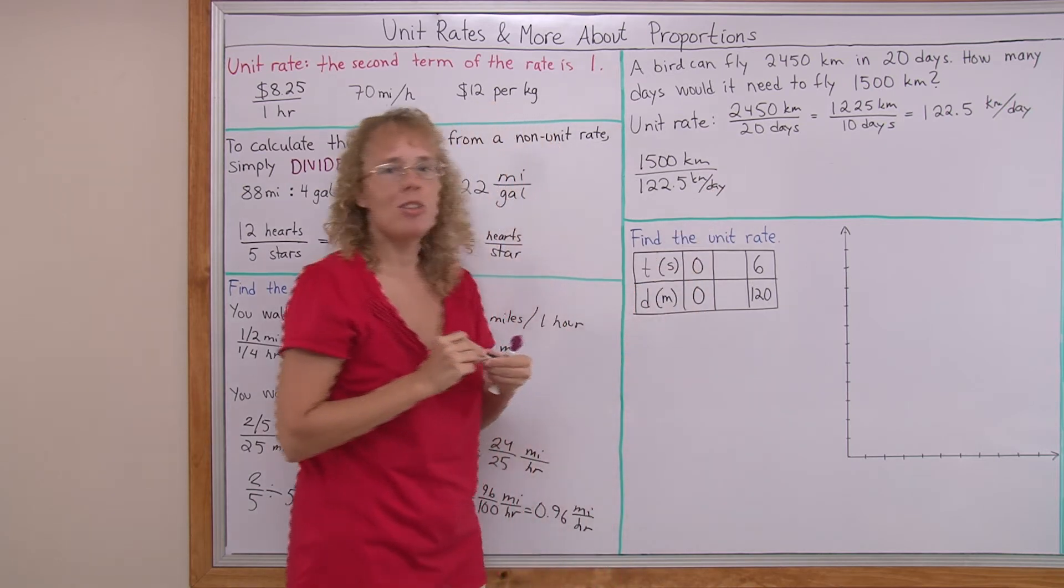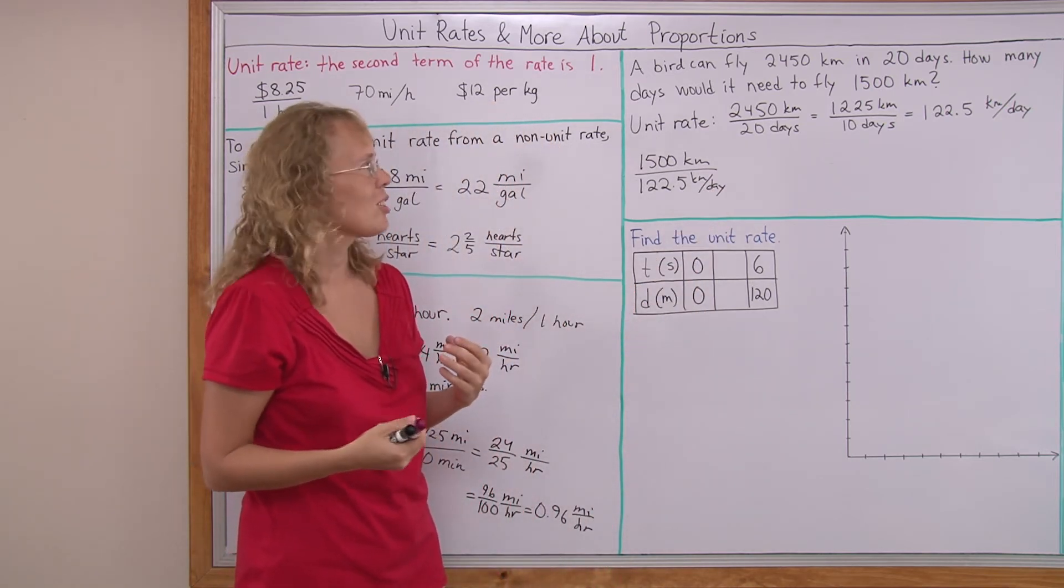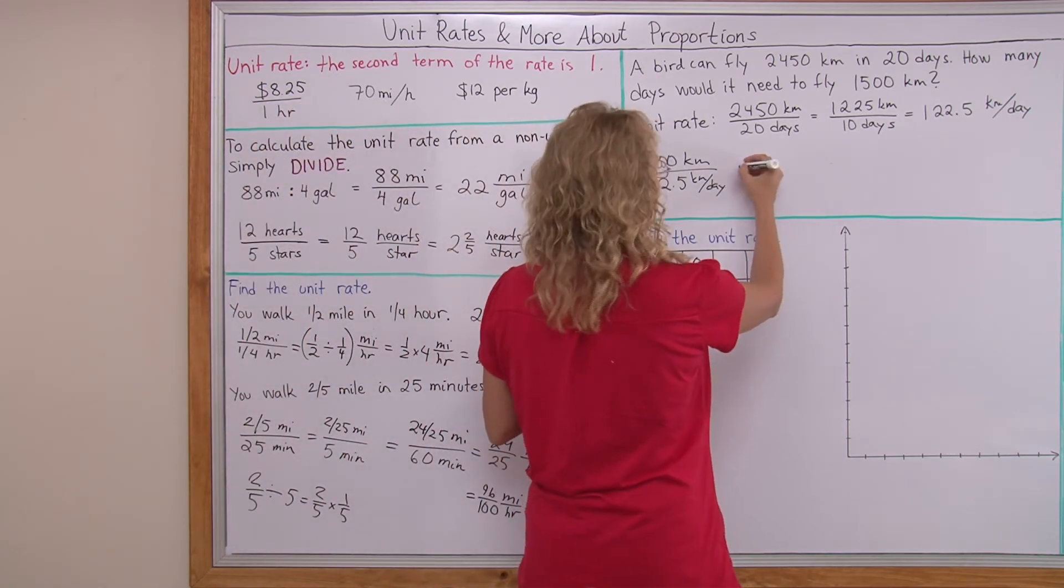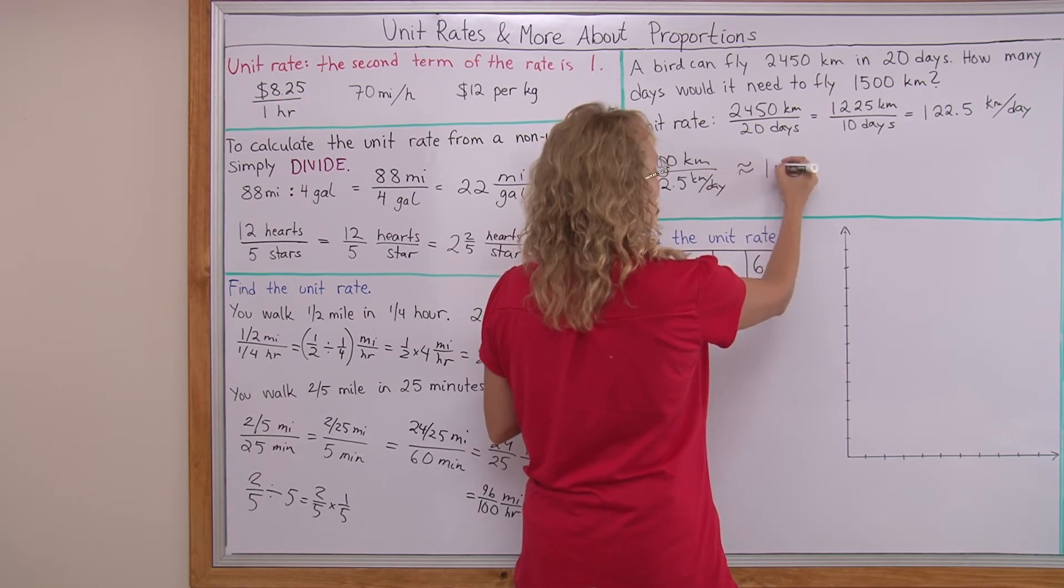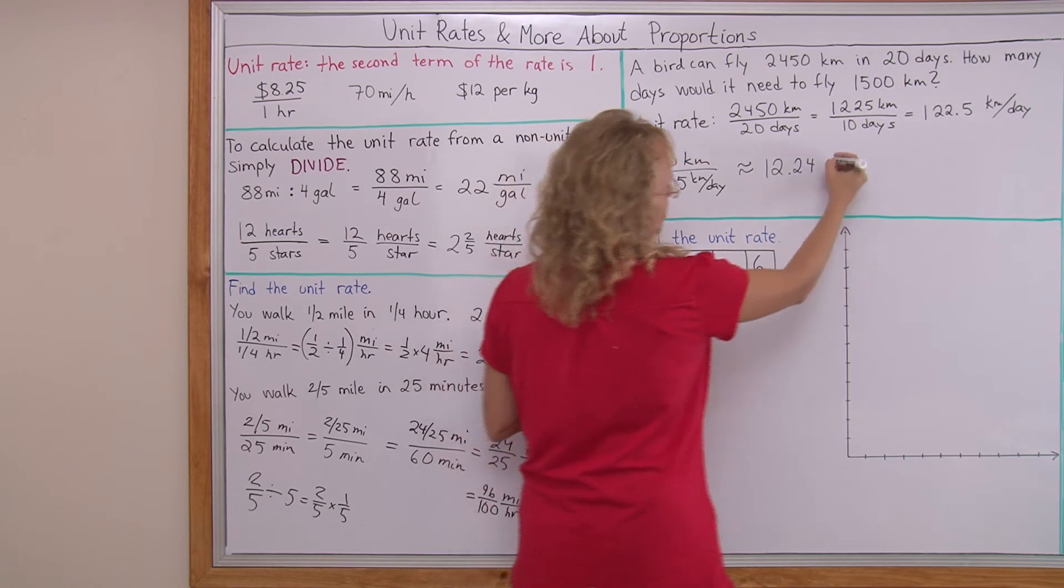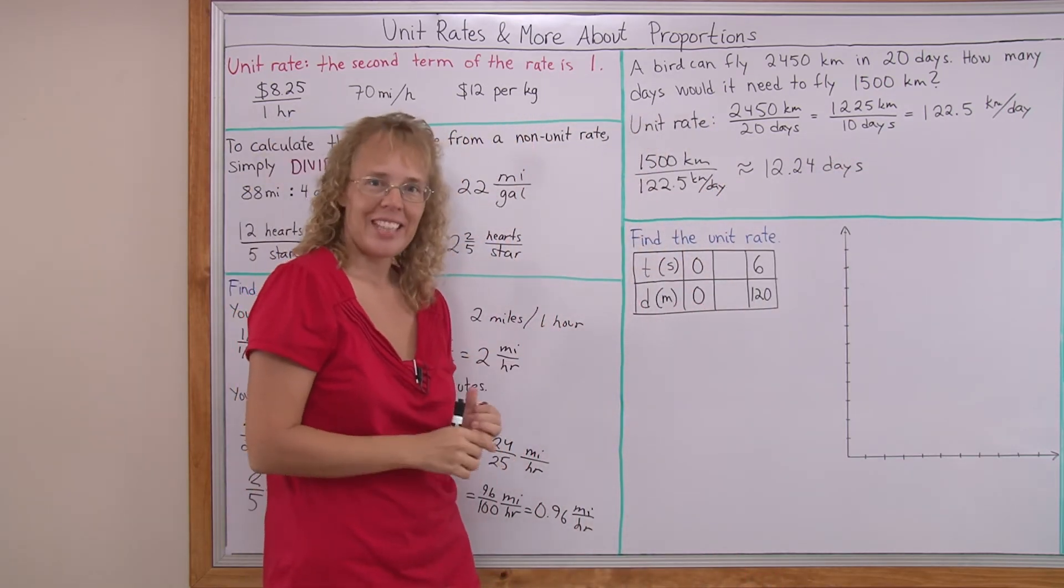And if you're not sure what to do, if you're not sure that maybe I should multiply those numbers, you also notice that multiplication gives you too big of an answer. So we divide this. And I did. And the answer is about 12.24 days, about 12 and one fourth days.